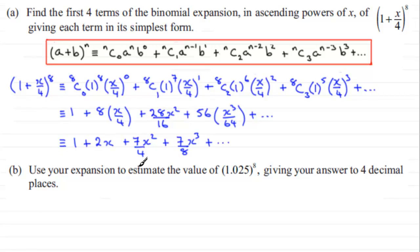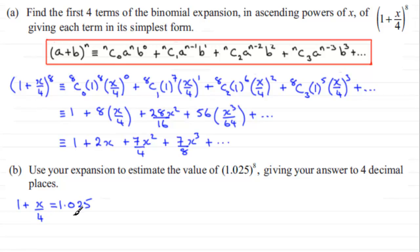Next, we use our expansion to estimate 1.025^8. Comparing this to our expression, both are to the power 8. So I need to find what x makes the bracket equal 1.025. Setting 1 + x/4 = 1.025, subtracting 1 gives x/4 = 0.025, and multiplying both sides by 4 gives x = 0.1.